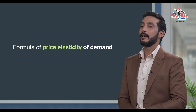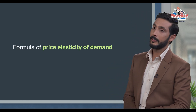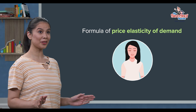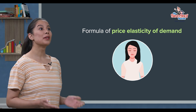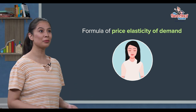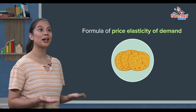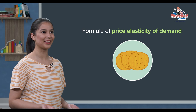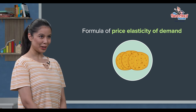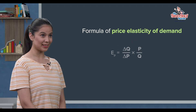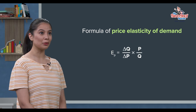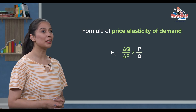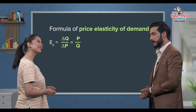Now you can use the formula to calculate the price elasticity. The formula is: price elasticity Ep equals delta Q divided by delta P, times P divided by Q.